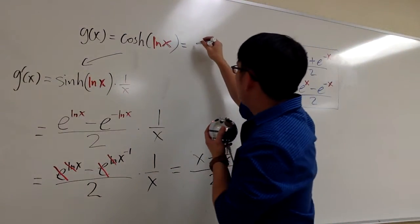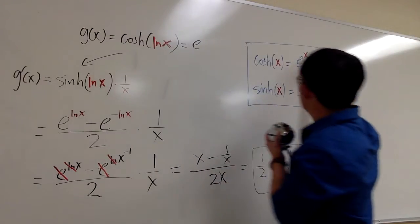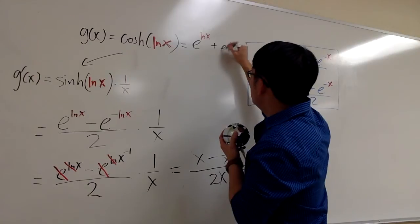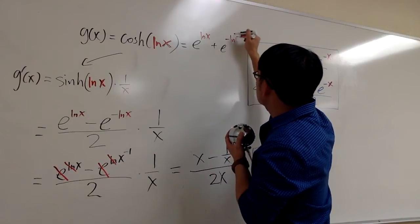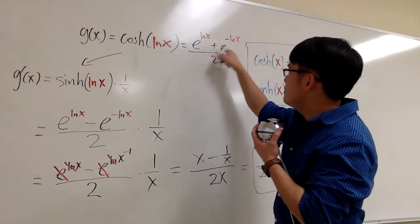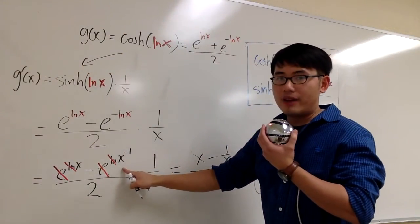So we will begin by saying this is the same as e to the ln x plus e to the negative ln x over 2. And this part is just the same as that one.